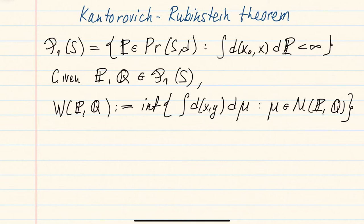First, recall that the Wasserstein distance was defined not on all probability measures but on this subset which we denoted P1(S) — the probability measures such that the distance function from any fixed point x₀ is integrable.